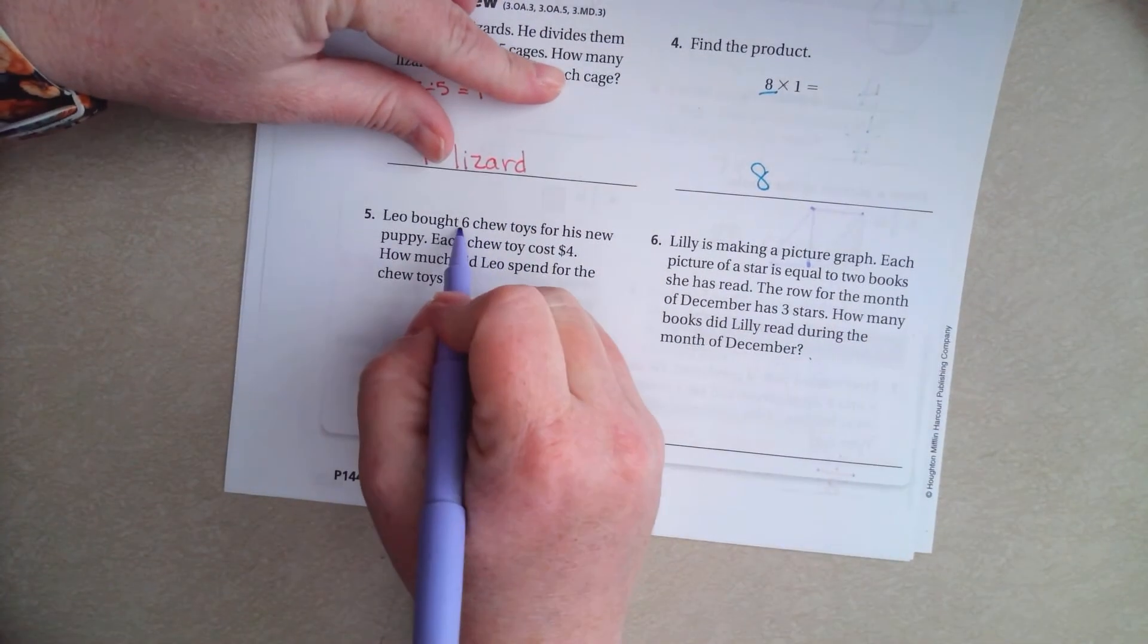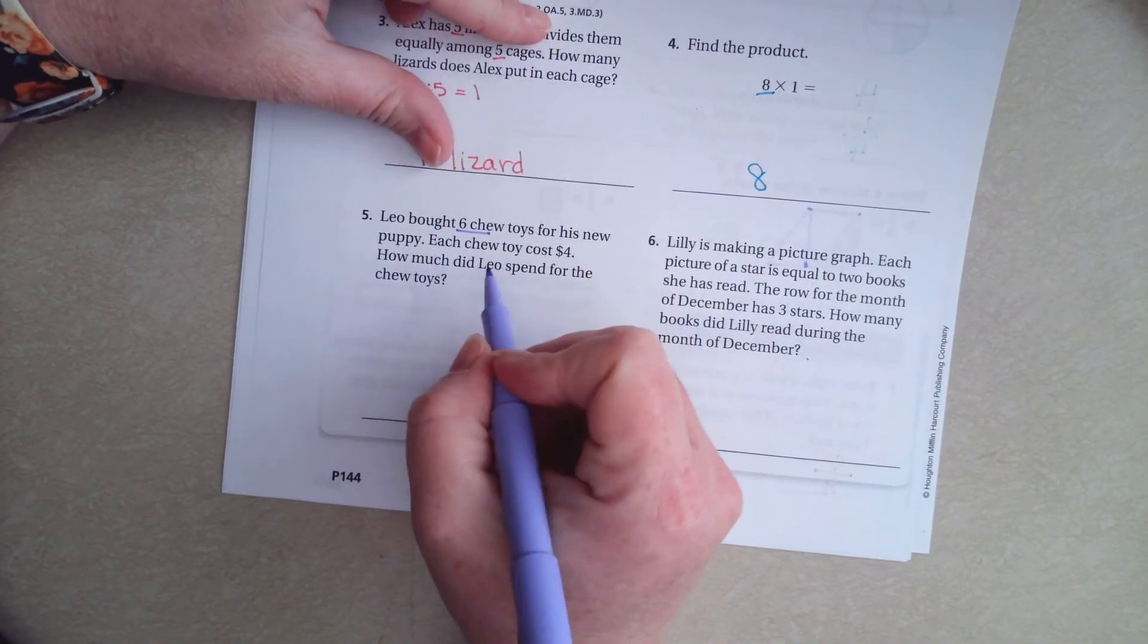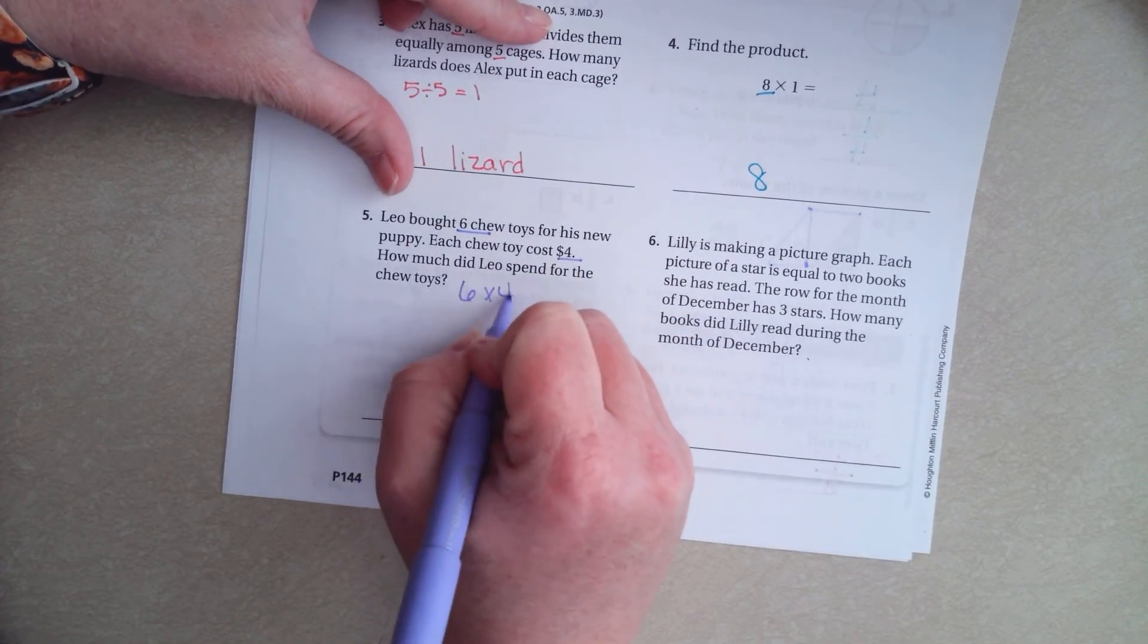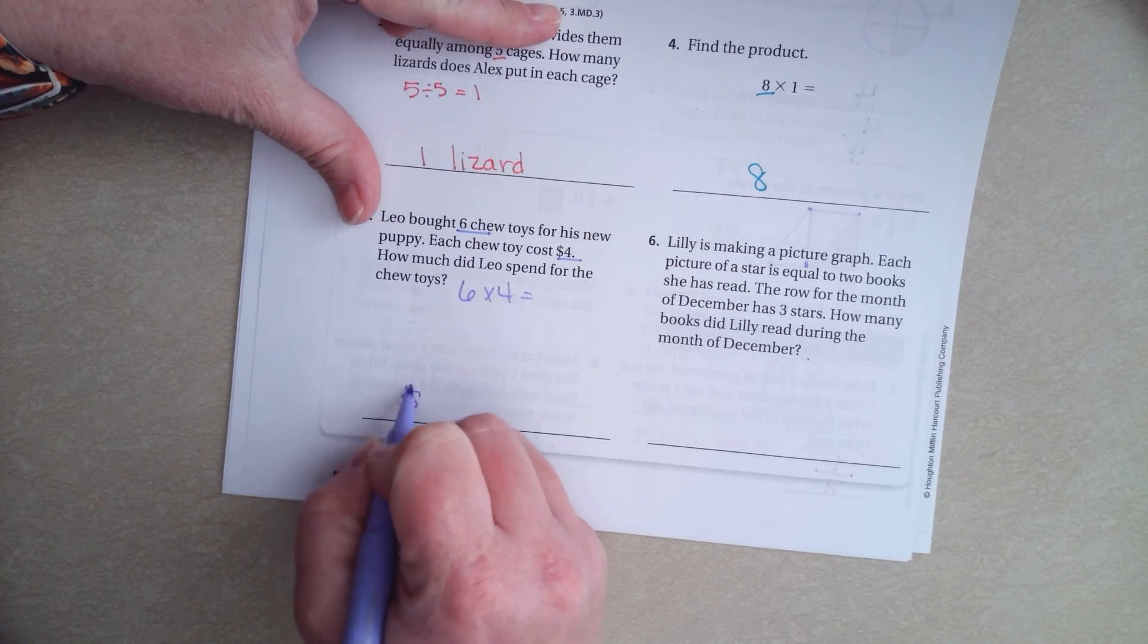Leo bought six chew toys for his new puppy. Each toy costs four dollars. How much did he spend? Well, six times four. That's twenty-four dollars.